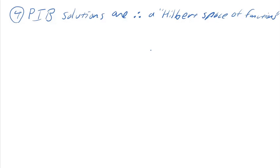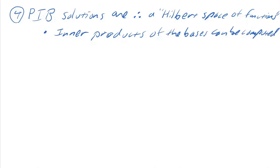The fourth thing I would say about solutions to the particle in box problem: they are a Hilbert space of functions. Because the Hilbert space has all those properties listed above. I'll put it in bullet point. The inner products of the basis functions can be computed, and when you compute it, you get the Kronecker delta function. A second thing is that a Hilbert space has an infinite set of orthonormal basis functions.